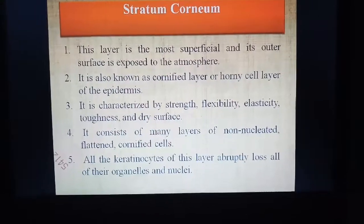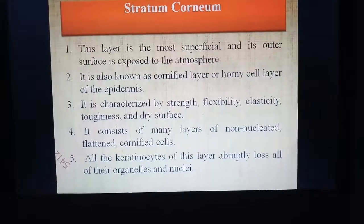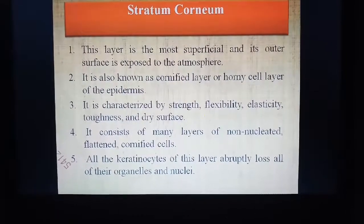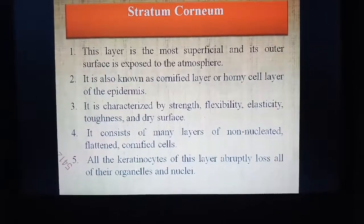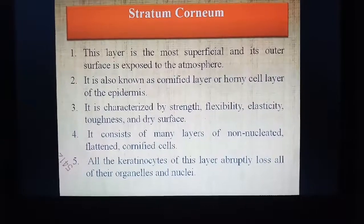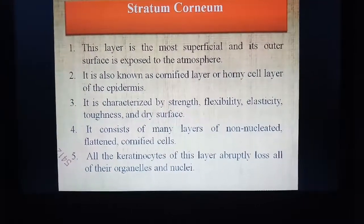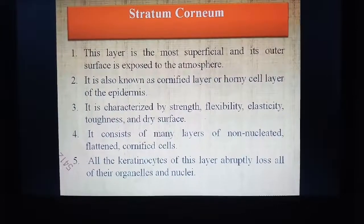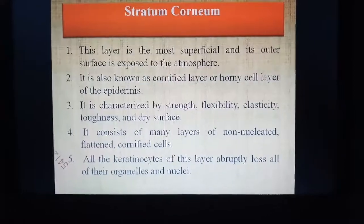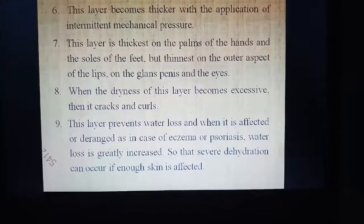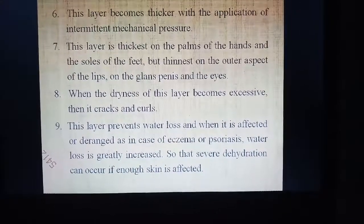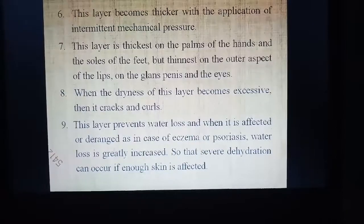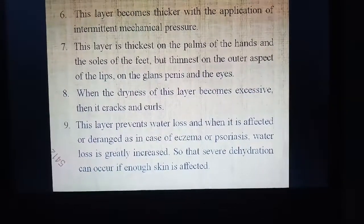The stratum corneum is the most superficial layer, with its outer surface exposed to the atmosphere. It is also known as the cornified layer or horny cell layer of the epidermis. It is characterized by strength, flexibility, elasticity, toughness, and a dry surface. It consists of many layers of non-nucleated, flattened, and cornified cells in which all keratinocytes have lost their organelles and nuclei. This layer is thickest on the palms and soles, but thinnest on the outer aspect of the lips, the glans, and over the eyes.